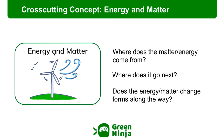Being sustainable relates to the cross-cutting concept of energy and matter. When a scientist thinks about energy and matter in any context, it prompts them to ask three generic questions every time: Where does the energy and matter come from? Where does it go next? And does the energy and matter change forms along the way? You can practically understand anything in science if you can answer these three questions.